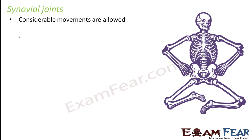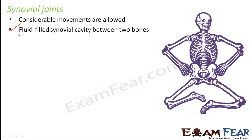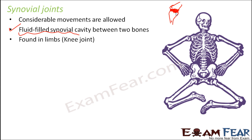The third type is synovial joints, where considerable movements are allowed. This is because here the cavity is filled with a fluid. This fluid-filled synovial cavity between the two bones allows free movement — the two bones can slip over the fluid-filled cavity and cause movement. These joints are found in limbs like the knee joint, elbow joint, and shoulder joint. Our hands and legs are the most flexible parts of our body, resulting in a lot of movements, so they are all examples of synovial joints.